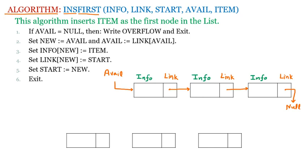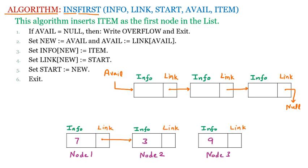Our linked list has three nodes. Every node has an info part containing an element — let's say the elements are 7, 3, and 9. The link part of node one points to node two, node two points to node three, and the last node points to null. The first node is pointed to by 'start'. The algorithm uses: info part, link part, start, available, and item.